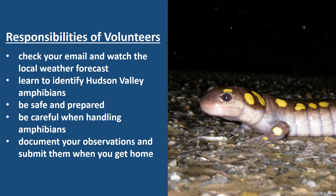Before the season starts, you're going to need to learn to identify Hudson Valley amphibians. There are only about eight key species that you'll want to know very well, and you'll have great resources available on the website and through the training videos to learn those amphibian identifications, as well as resources to bring with you while you're out on a migration night. Also, before going out and while you're on the road, you need to be safe and be prepared for the conditions, which I'm going to talk about in the upcoming slides.